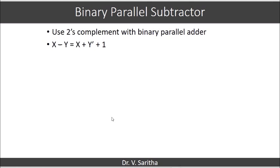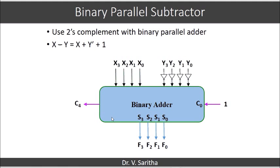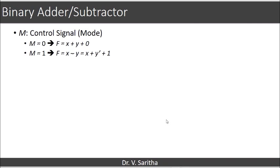The same binary parallel adder circuit can be converted to perform binary parallel subtraction using 2's complement. X minus Y can be represented as X + Y̅ + 1. In the circuit, instead of giving Y directly to the binary adder, we put NOT gates to get Y̅. To support both addition and subtraction in one circuit, we use a mode control bit M: M=0 for binary parallel addition and M=1 for binary parallel subtraction.